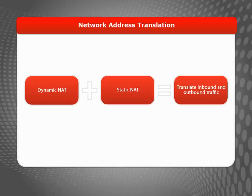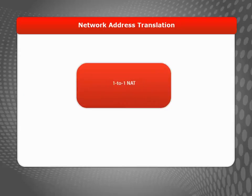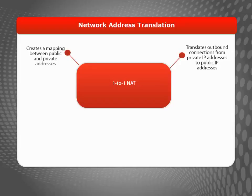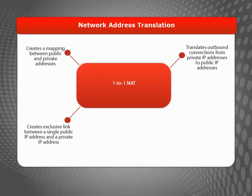If you want to avoid creating a separate rule for inbound and outbound connections, you can use a third type of NAT — 1-to-1 NAT — to create a mapping between public and private IP addresses. 1-to-1 NAT translates outbound connections from private IP addresses to public IP addresses, and inbound connections from public IP addresses to private IP addresses. It is not frequently used because it creates an exclusive link between a single public IP address and a private IP address, which may not be useful unless you have several public IP addresses to spare.